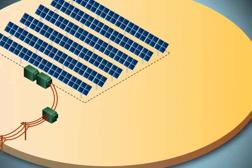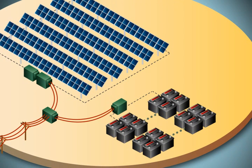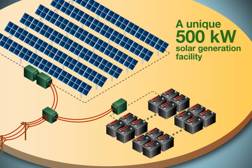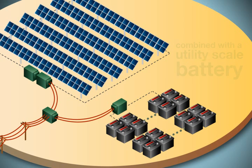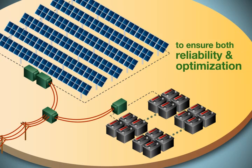As part of the Department of Energy's Smart Grid Energy Storage Demonstration Grants, PNM has constructed a unique 500 kilowatt solar generation facility combined with a utility-scale battery. The battery addresses the intermittent nature of solar generation to ensure both reliability and optimization.